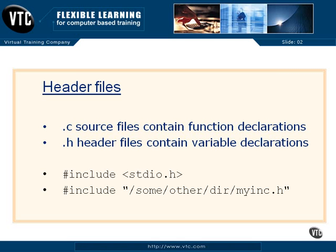Now take a look at this line of code here. This pound include standard io.h uses the less-than and greater-than signs. That is really a preprocessor directive. This tells the preprocessor to go look in the standard library path of where these header files are stored for the compiler.